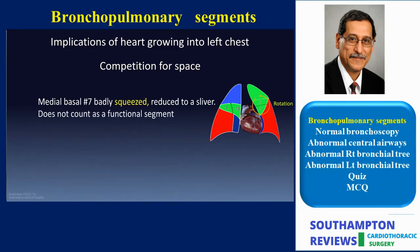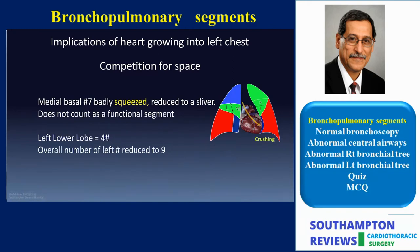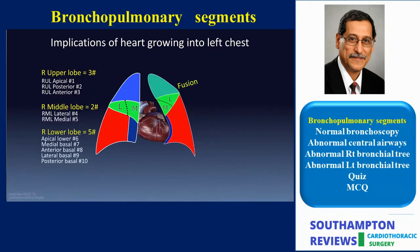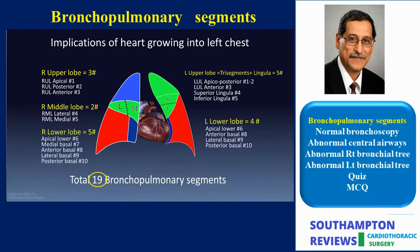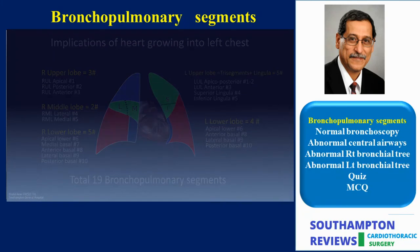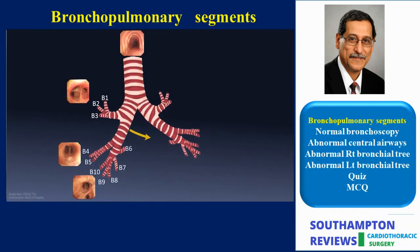The pushing and squeezing is maximum on the left lower lobe. Subsequently, the medial basal segment (LS7) is completely squashed into a thin sliver and functionally can be ignored. Therefore, the left lower lobe has four instead of five segments. The implications of this segmental loss is that the total number of bronchopulmonary segments is 19 and not 20. This is taken into account when calculating predicted postoperative FEV1 and gas transfer factor.